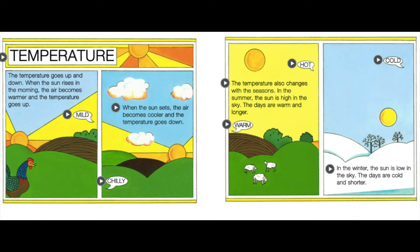The temperature goes up and down. When the sun rises in the morning, the air becomes warmer and the temperature goes up. When the sun sets, the air becomes cooler and the temperature goes down.